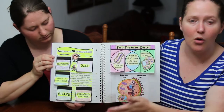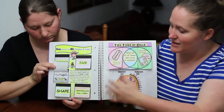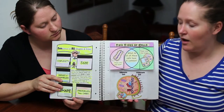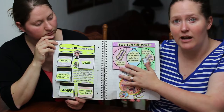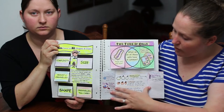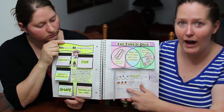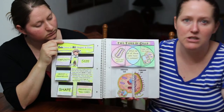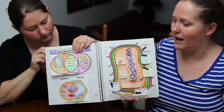Here are more interactive notebook activities on cells. This one talks about how cells come in all different shapes and sizes with examples. The next activity covers the two types of cells — prokaryotes and eukaryotes — using a Venn diagram or a side-by-side comparison so students can clearly see what each type has and what they share. You can use both activities or just one.